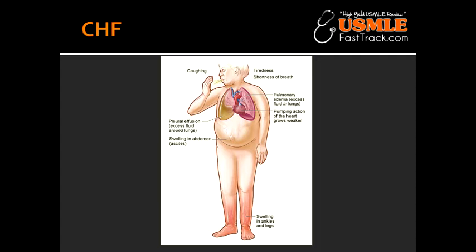What are some of the drugs that can reduce the mortality rate of patients with congestive heart failure? Some of the drugs that can reduce the mortality rate include ACE inhibitors, beta blockers (except in conditions like acute decompensated heart failure), angiotensin receptor antagonists, and spironolactone.